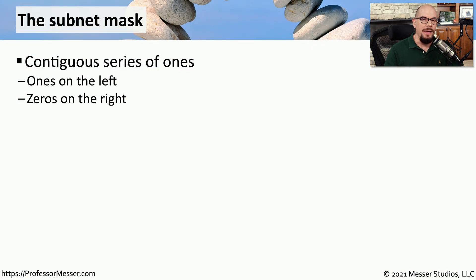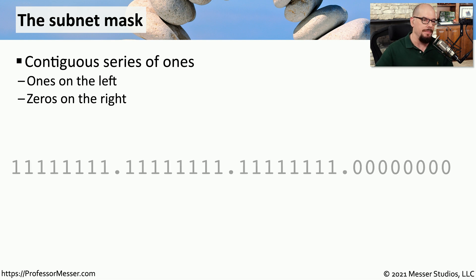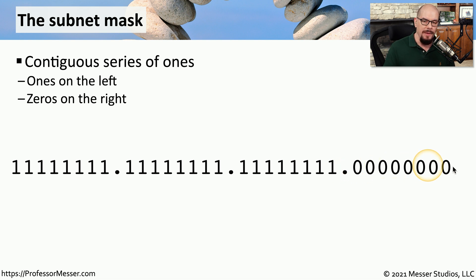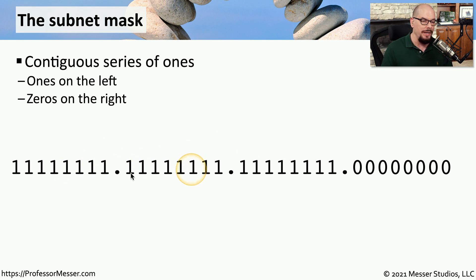A subnet mask is a contiguous series of 1s. You'll notice that all of the 1s are on the left side of the subnet mask, and the 0s are on the right side. For example, you can see there are contiguous 1s all the way from the left up until a certain point, and the remainder of the subnet mask is all 0s. You will not have a subnet mask that has interlacing 1s and 0s — all the 1s will always be on the left, and all the 0s will always be on the right.